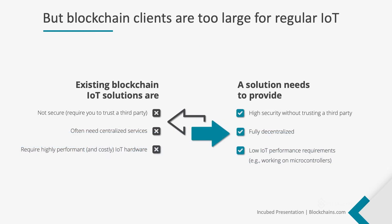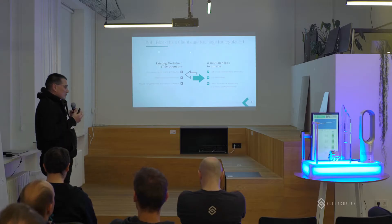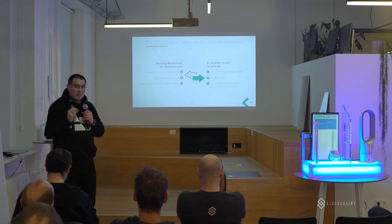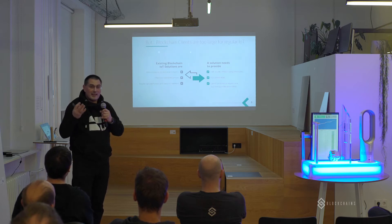So what is our goal? When we think about existing solutions, most of them are using centralized services and are not secure. The client or the application itself cannot validate what comes from the blockchain. We want to do this with a very secure system. When we think about IoT devices, we have very small devices with capabilities that are not able to run any existing clients.